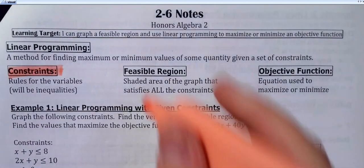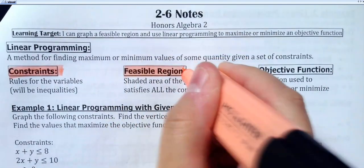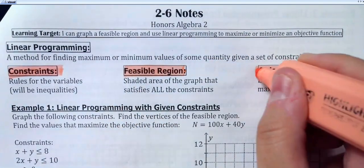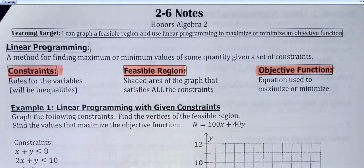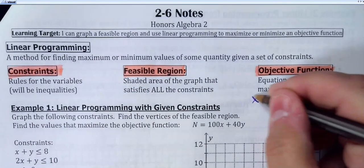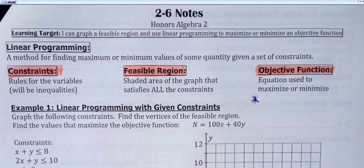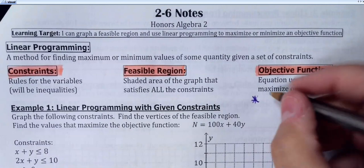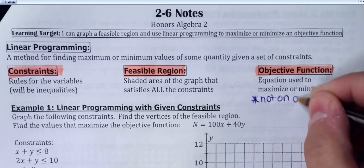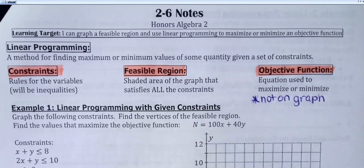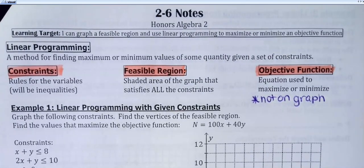The last definition is the objective function. The objective function is going to be either to maximize something or minimize something. It usually gives you something like P equals for profit, or C equals for cost. But this is not on the graph — the objective function is not something you actually put on the graph. We're going to plug points from the graph into it, but it's not going to be part of your system of constraints.